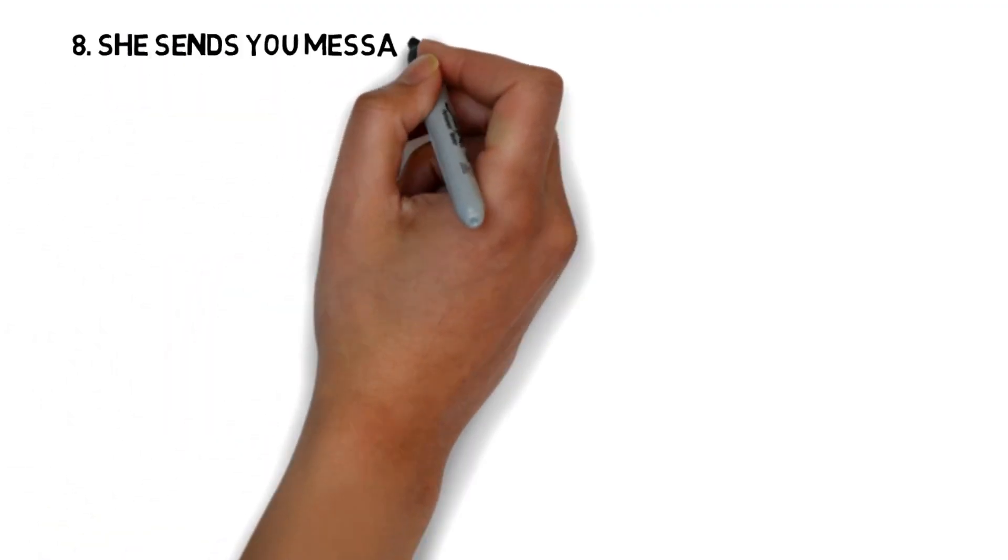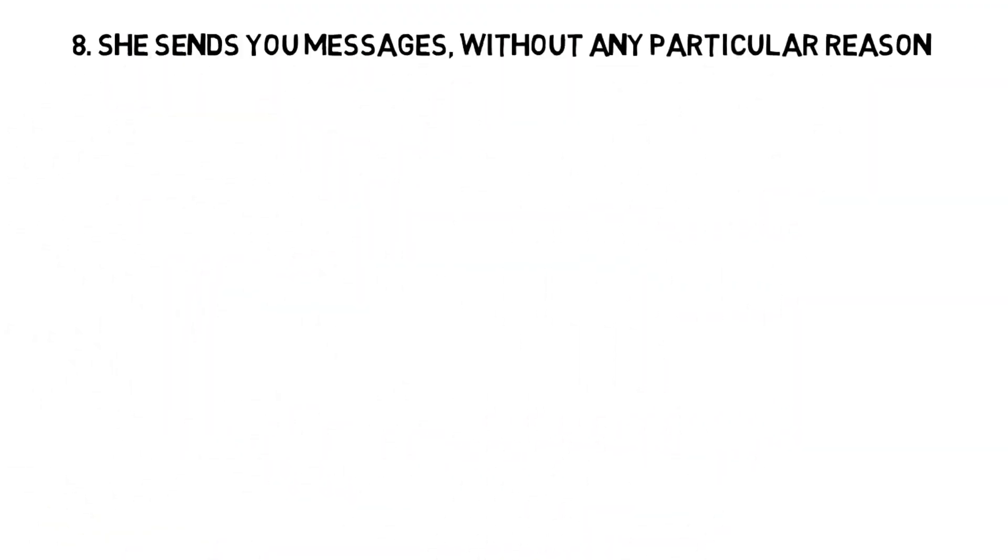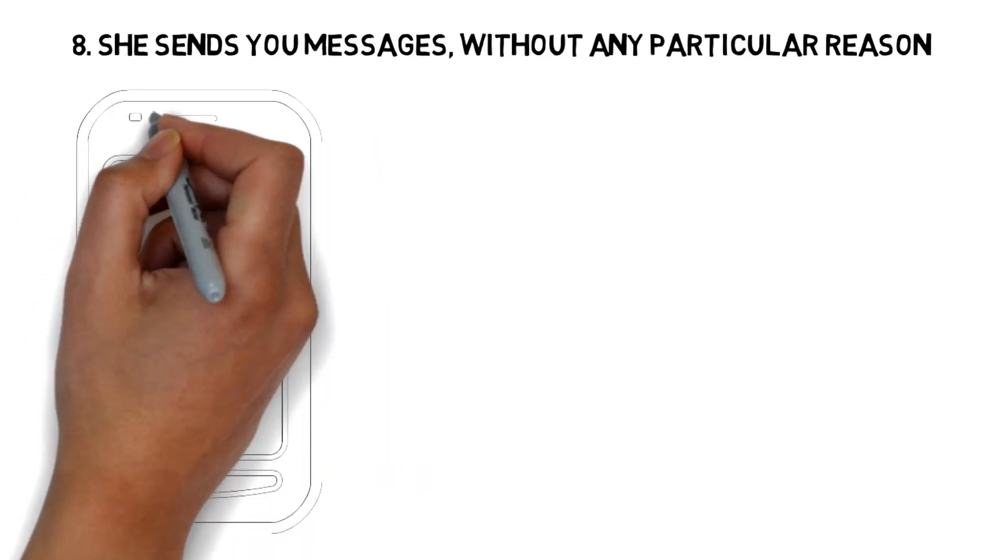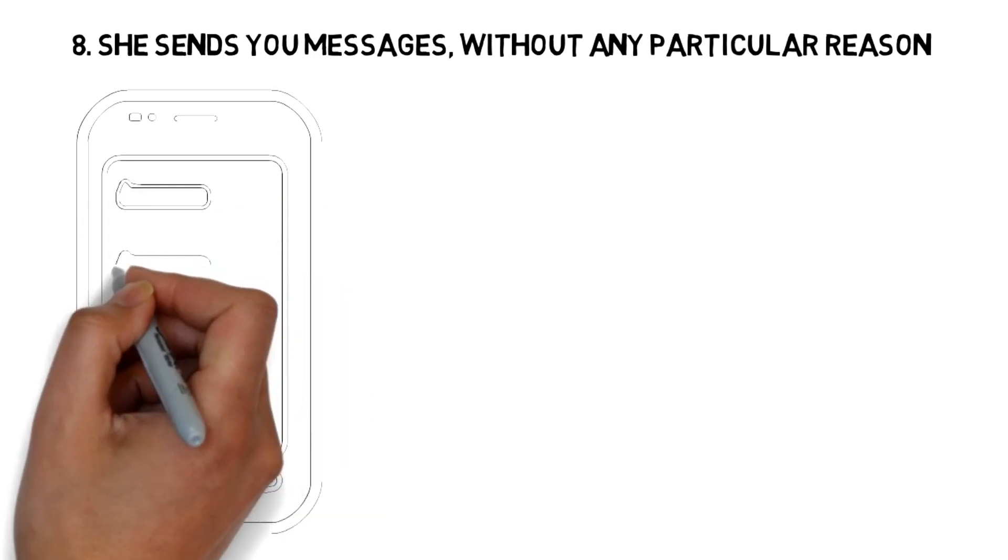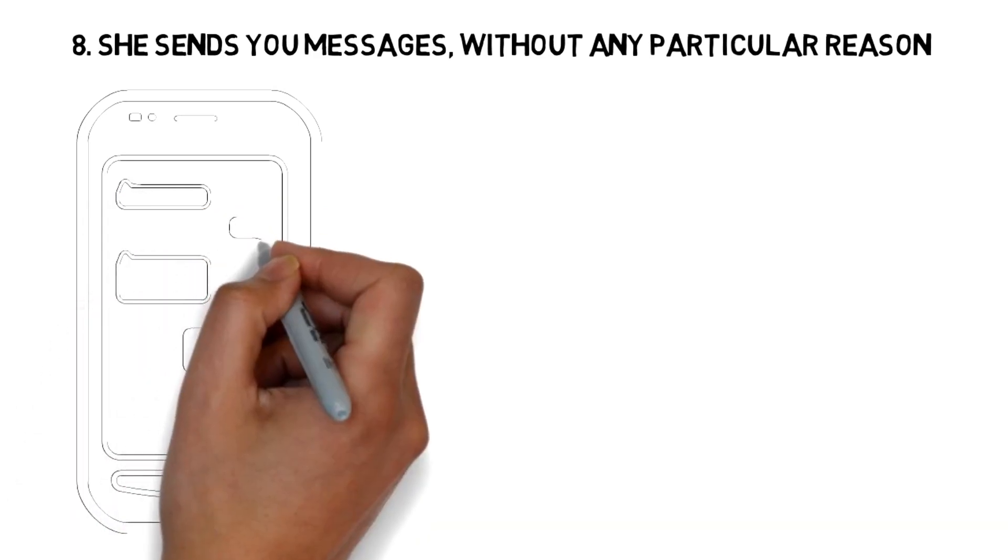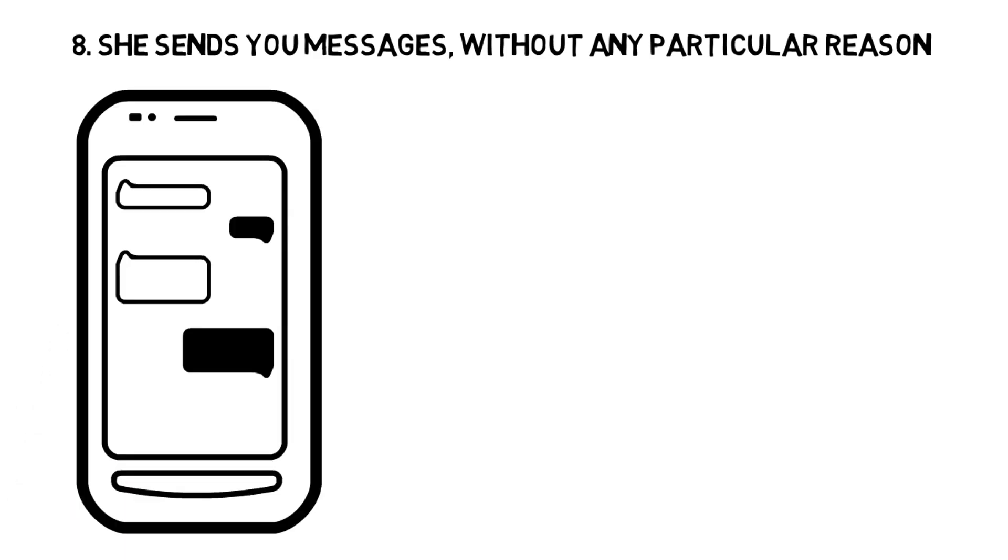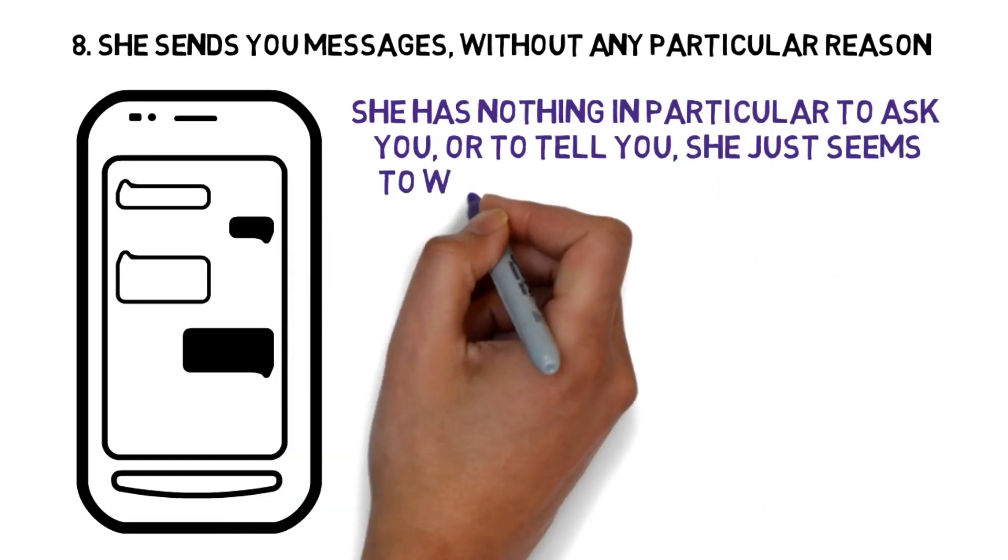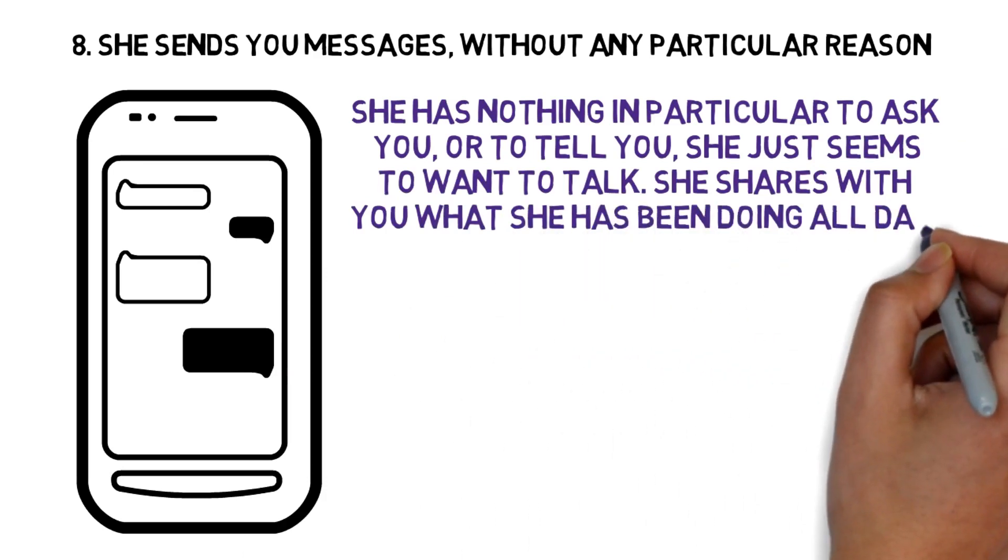8. She sends you messages without any particular reason. Before she sends you messages in the context of work or studies, or always with a specific purpose. But lately, this girl you like has been sending you more messages. She has nothing in particular to ask you or to tell you, she just seems to want to talk.